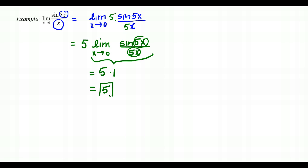Now we have matching terms, so the trig limit gives us 1, and 5 times 1 equals 5. The key was clever multiplication: put the needed 5 in the denominator, compensate with a 5 in the numerator, pull it out via the constant law, and apply the special trig limit.